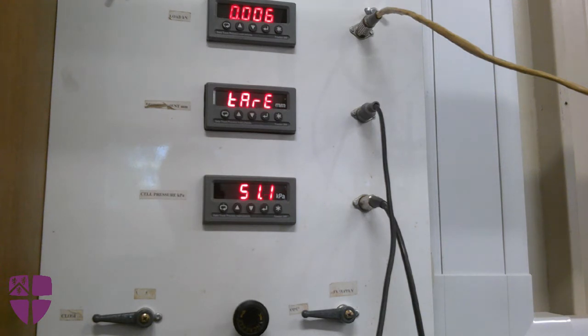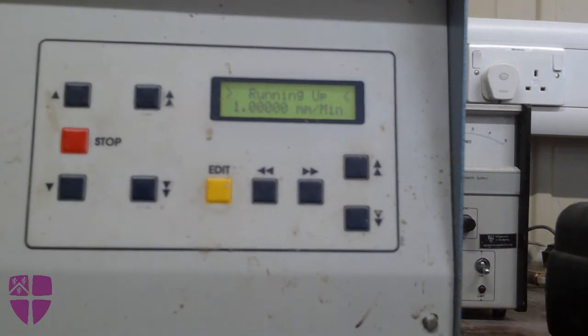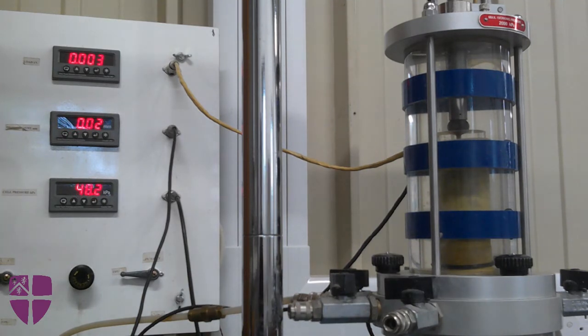Once the required cell pressure is set, open the valve of the chamber which will apply this pressure to the sample in the chamber. To start shearing, press the up button on the triaxial rig. This will move the pedestal upward at the required strain rate, thus applying a load on the sample. Note the load and displacement values displayed on the controller at regular intervals until the end of the test.